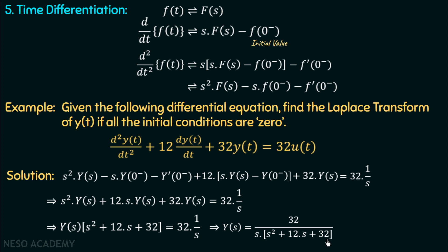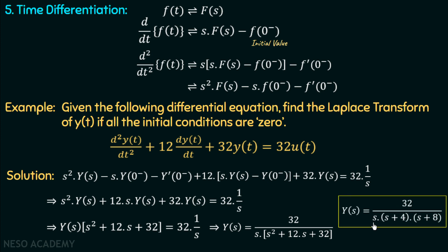Factorizing the quadratic, we get two factors: (s + 4) and (s + 8). So Y(s) = 32 / [s·(s + 4)·(s + 8)]. This is the Laplace transform of y(t), calculated using the time differentiation property. Notice that we have converted a complicated differential equation into a simple algebraic equation using Laplace transform properties, which is one of the key advantages of using the Laplace transform.